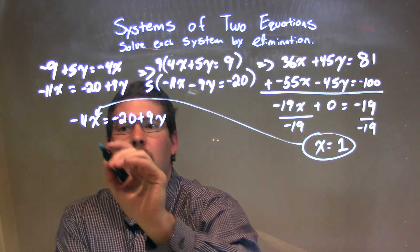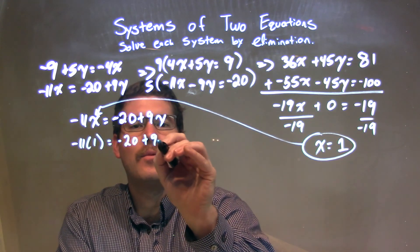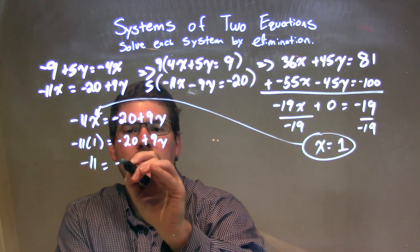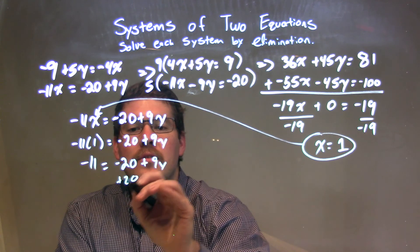1 goes in for x right there. We have negative 11 times 1 equals negative 20 plus 9y. Negative 11 times 1 is just negative 11 equals negative 20 plus 9y. I'm going to add 20 to both sides.